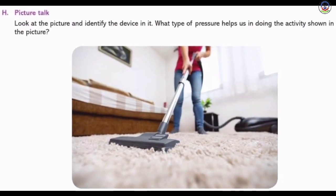Question 8: Look at the picture and identify the device. What type of pressure helps us in doing the activity shown? Answer: A vacuum cleaner works just like a straw — it sucks out air, creating low pressure. This low pressure also draws up dirt and other small objects into the vacuum cleaner.